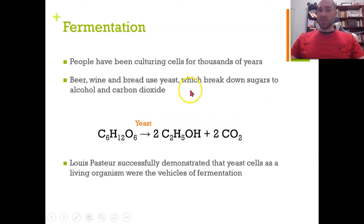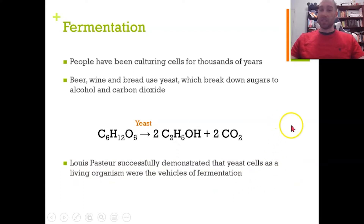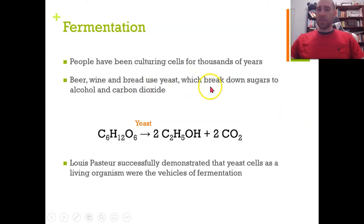Beer, wine, and bread all use yeast, which is a microorganism. It breaks down sugars and produces ethanol and carbon dioxide — we've looked at this in anaerobic respiration. It took a while for people to relate the yeast used to produce beer, wine, and bread to fermentation, the chemical reaction that was occurring. Louis Pasteur famously demonstrated this — it was the yeast cells doing the fermentation, though it still took a while for this idea to take hold. The yeast used for fermentation has been passed down from baker to baker, brewer to brewer for a very long time.